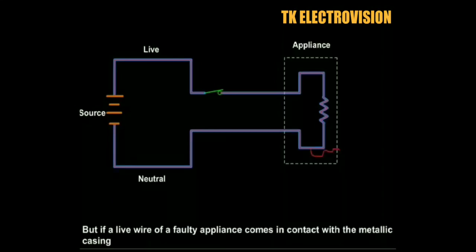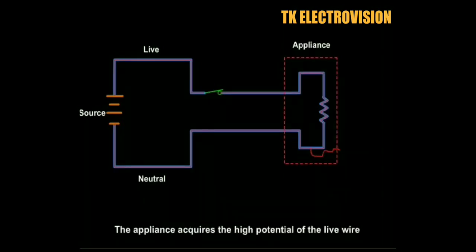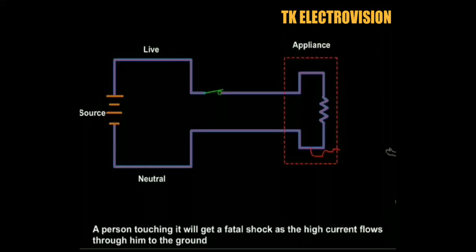If there is a fault in the appliance, the current flows from the live wire to the metal body. It causes a fatal electric shock to the person touching it.